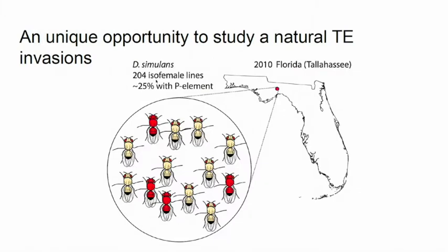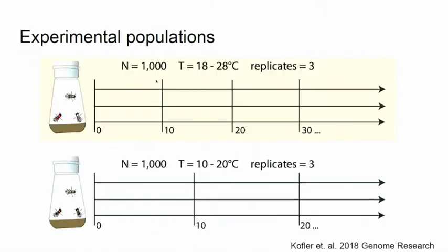Thanks to Ray's sacrifices, we also had a nice opportunity. We collected a population of simulans flies at the very early stage of an invasion — here in Tallahassee, Florida — collecting about 240 isofemale lines, where about 25% had the P element. This provides the first opportunity ever to study a transposable element invasion in experimental populations. We kept these flies in experimental populations for many generations in hot conditions (18–28°C) or cold conditions (10–20°C), using 10 replicates, and sequenced them at generations 10, 20, 30, and so on, in pools.